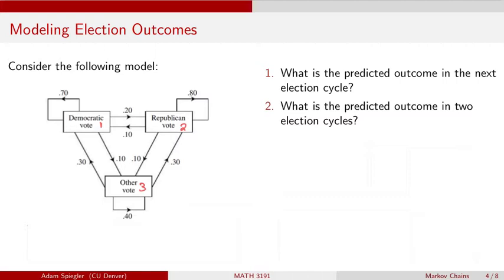If a person voted for a Democratic candidate in this election, there's a 70% chance they are going to vote for a Democratic candidate in the next election, a 20% chance they change and vote for a Republican candidate, and a 10% chance that they change their vote for another candidate that is not Democrat or Republican.